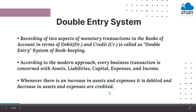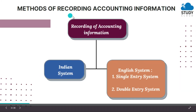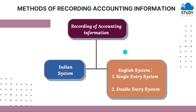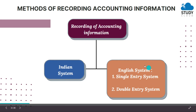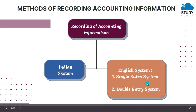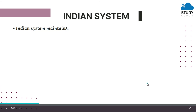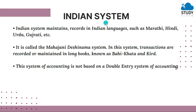Now let's look at the methods of recording accounting information. There are two methods — the Indian system and the English system. In the English system, there are two types: single entry system and double entry system. We will first study the Indian system.